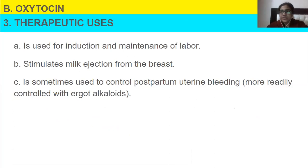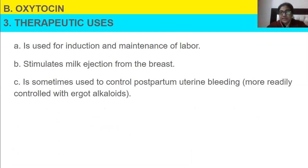Therapeutic uses of oxytocin include induction and maintenance of labor, stimulation of milk ejection from the breast, and it is sometimes used to control postpartum uterine bleeding, though this is more readily controlled with ergot alkaloids.